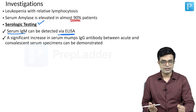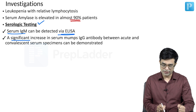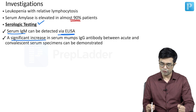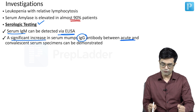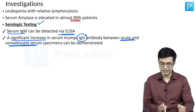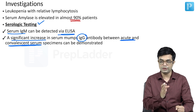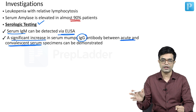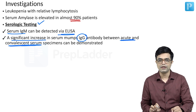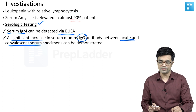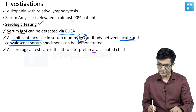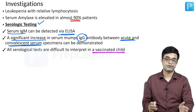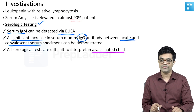You can also do IgG antibody. There will be a significant rise in the antibody titers of IgG when you do for acute and convalescent serum specimens, but it will not be helpful in immediate diagnosis — paired samples need to be taken before and after. All serological tests are difficult to interpret in a vaccinated child, so you may find erroneous results.